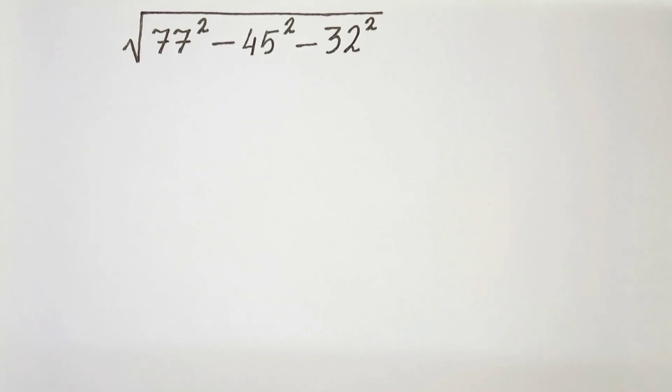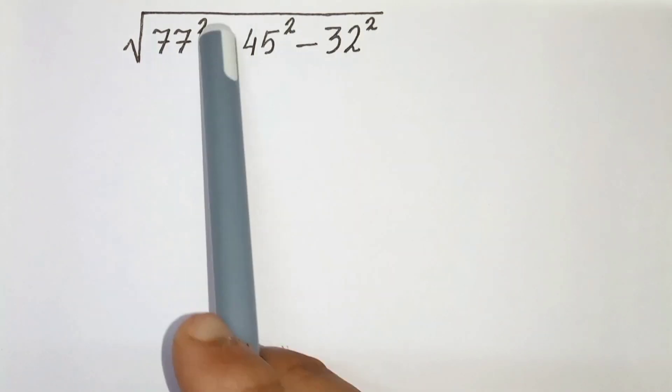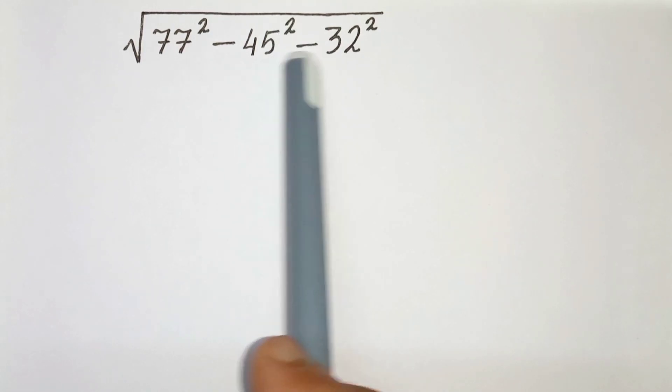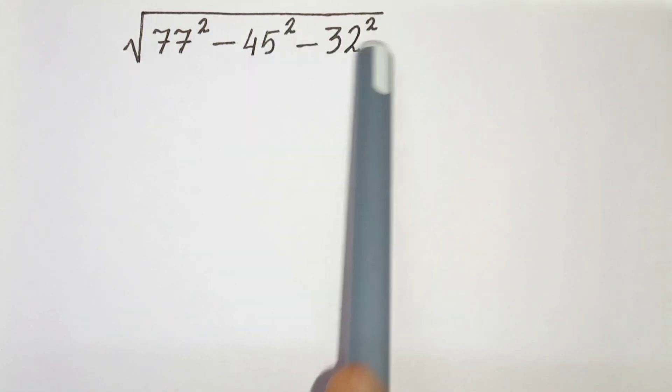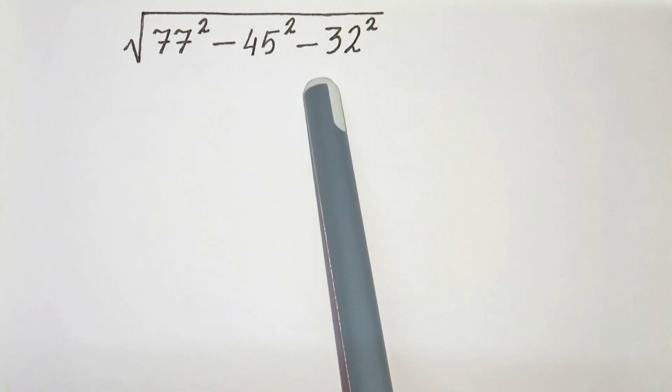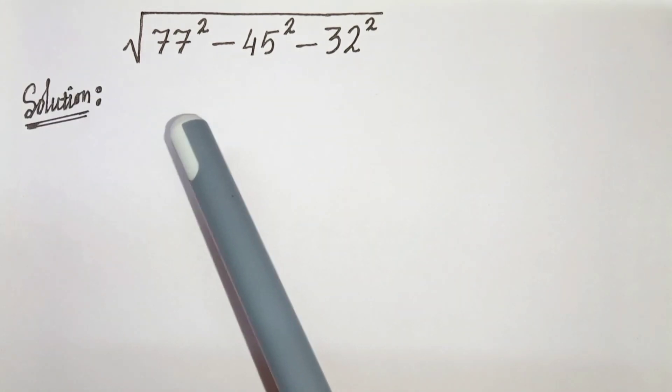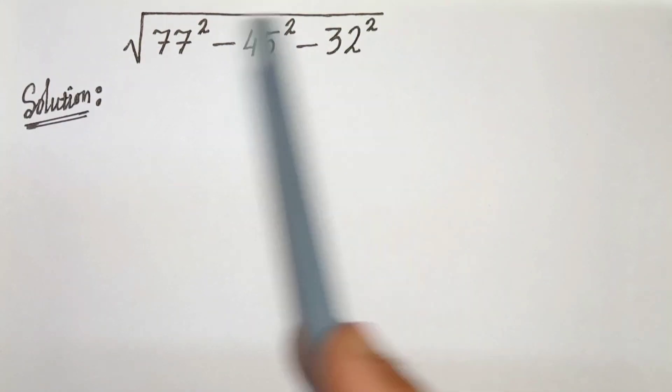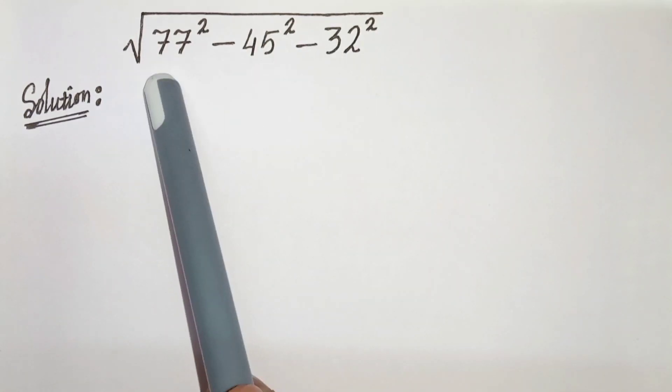Hello everyone, in this video we have root under 77 square minus 45 square minus 32 square. We have to find the value of this. So let's start. In this type of problem there must be some pattern that we can find so that our calculation becomes easier.